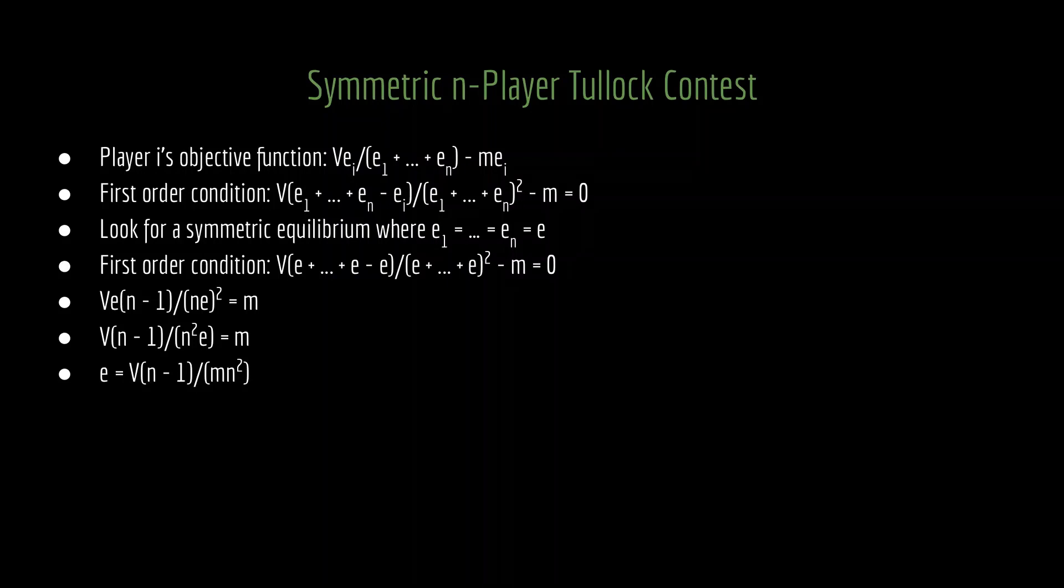And if we make that substitution into the first order condition, this starts to simplify very nicely. And then we get our solution. e is equal to the value v times n minus 1, the number of groups minus 1, divided by the marginal cost times the number of groups squared. This is the optimal effort level for each of these symmetric groups.